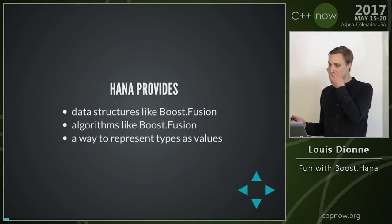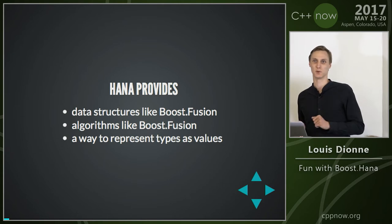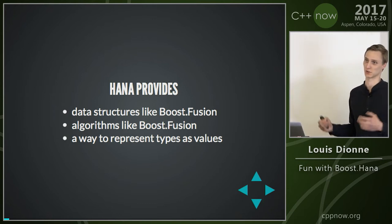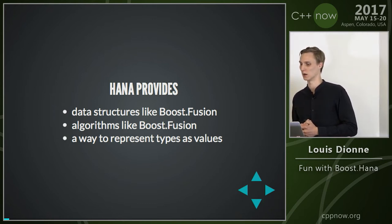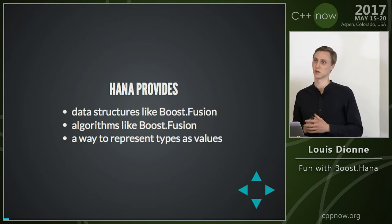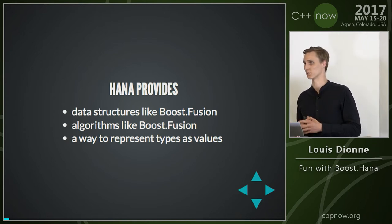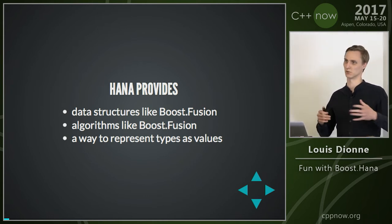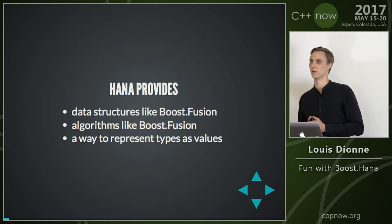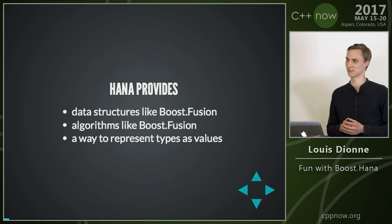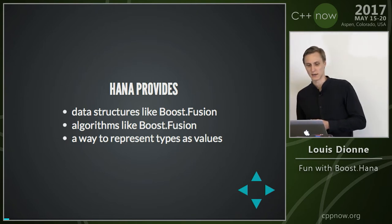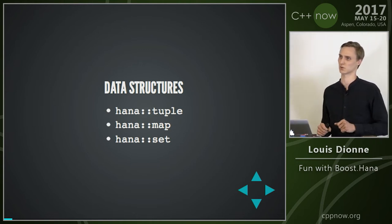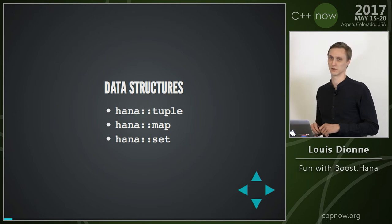HANA is a library like Fusion, essentially, that allows you to do algorithms on heterogeneous sequences — so algorithms on tuples. And by providing a way to represent types as values, it's also able to solve the same set of problems as MPL does. The benefit is that we get value syntax, closer to the usual C++ syntax than MPL where angle brackets are a little too common. It provides two full data structures: the map and the set, which are the fundamental pieces.